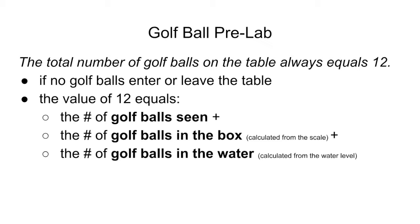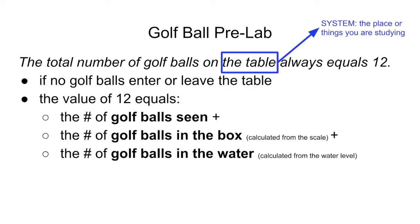Now let's apply some physics terms and make some sense of this whole golf ball counting exercise. Let's first look at the table — the table is where we looked throughout this entire experiment and counted the number of golf balls. When we pick a place or location or things that we're going to focus on when we're studying something, we call that a system. The system is the place or things that you are studying. Instead of saying the entire classroom, we're going to say we're going to focus on the table.